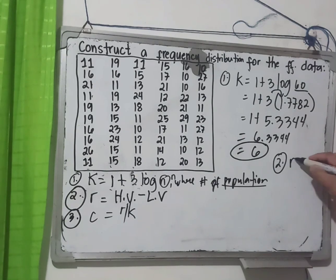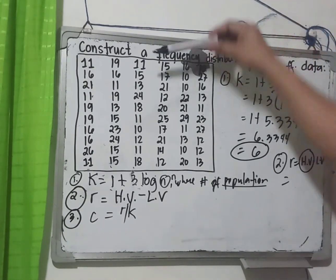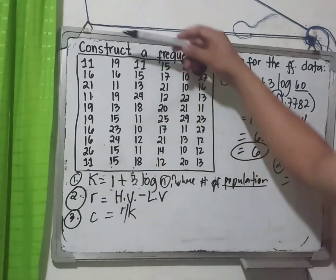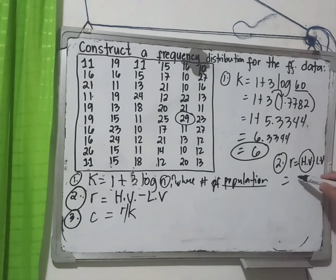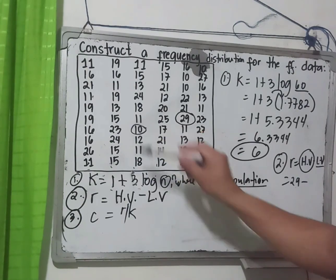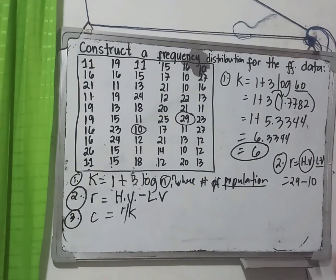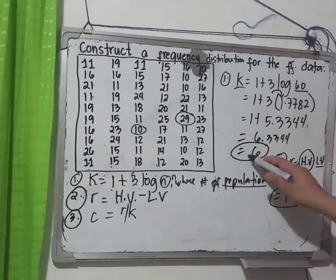Step number two: find the value of r. R equals highest value subtract lowest value. Looking at the data, the highest value is 29 and the lowest value is 10. So r equals 29 minus 10, which equals 19.